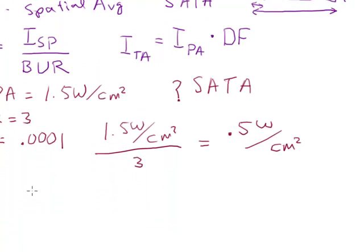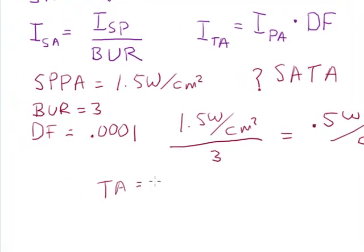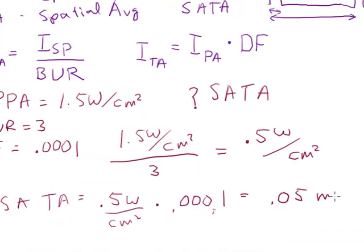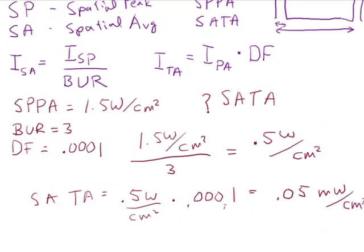And then to find the time average, I take that result and multiply it, since that's a pulse average, to find the time average for the SATA, I have to multiply that by the duty factor, which is 0.0001. If I move three decimal places, I'd be right here. And so that would be, if I just change to milliwatts, that would be milliwatts. And so it's going to equal 0.05 milliwatts per square centimeter.